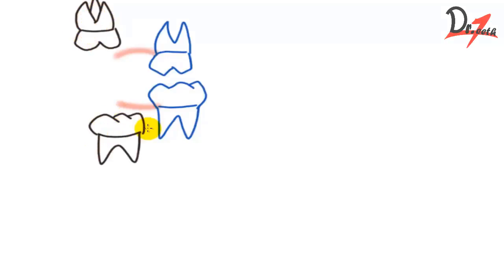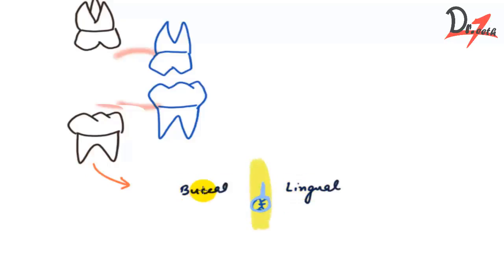The distal extension of the appliance will differ for the upper and lower arches. Here I am drawing the upper and lower deciduous molars with the space present because of the loss of the deciduous second molar, and the erupting permanent first molar. In the lower arch, the contact area of the distal extension should have a slight lingual position over the crest of the alveolar ridge.